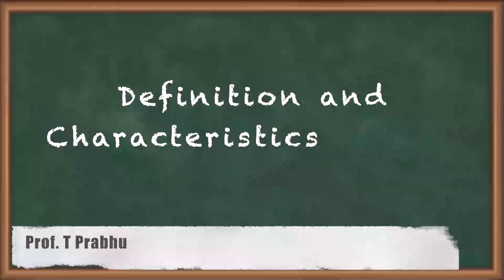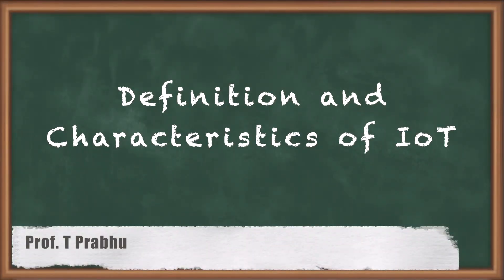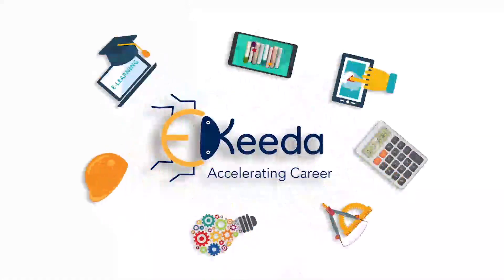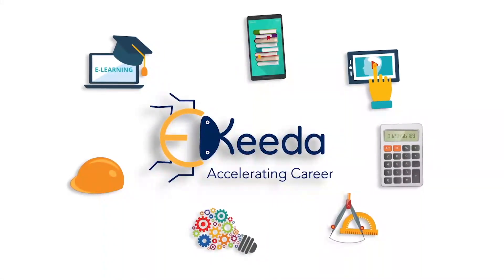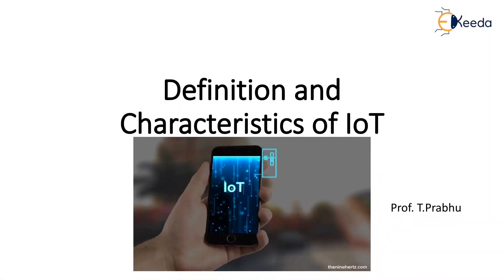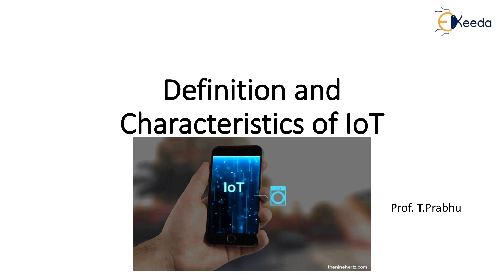Hello students. Today we are going to see the topic about definition and characteristics of IoT. IoT means Internet of Things — internet plus things — and their characteristics will be discussed in this following lecture.